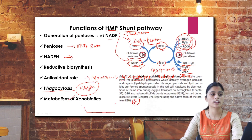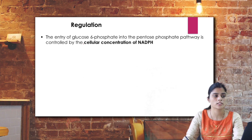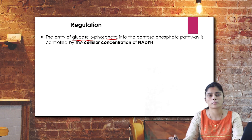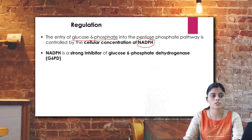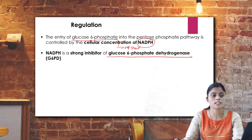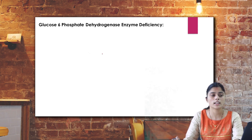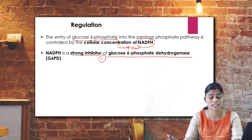The HMP shunt pathway is regulated primarily by the entry of glucose 6-phosphate and the cellular concentration of NADPH. If NADPH is low, more glucose 6-phosphate is directed into the HMP shunt. Conversely, if NADPH levels are high, it strongly inhibits glucose 6-phosphate dehydrogenase, reducing HMP shunt activity.